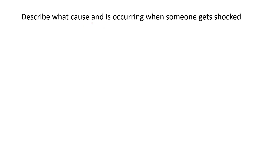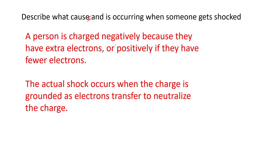What causes a shock? A person becomes charged, probably by friction — like walking across carpet where the rubber sole rubs against it. No charge wants to stay next to the same charge, so if you're positively charged, you gave off electrons and need electrons to neutralize yourself; if you're negatively charged, you have extra electrons. The shock occurs when there's a path — you touch a doorknob — and the electrons move either away from your body if you're negative, or toward your body if you're positive, and you neutralize yourself.